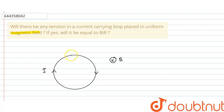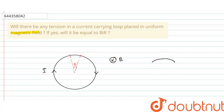Now, if we consider a very small section of the loop making an angle theta at the center, we need to find the tension in this loop. We zoom in on this small section. The tension acting on this section is T.